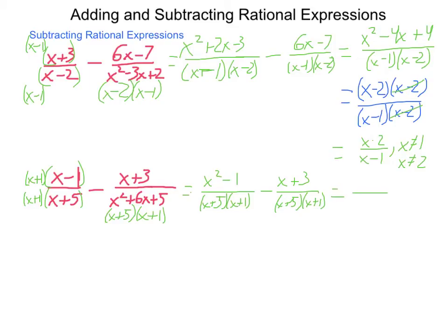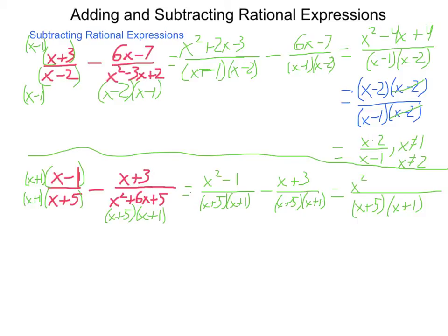Combining like terms with that common denominator, the denominator is x plus 5 times x plus 1. x squared cannot be combined with anything. Negative 1 combines with negative 3 giving negative 4, and then there's a minus x in the middle. Checking if the numerator factors: are there items that multiply to negative 4 and add to negative 1? The answer is no, so this is our final form, with restrictions that x cannot equal negative 1 and x cannot equal negative 5.